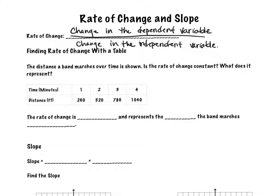This will make more sense in a second. We have a few different ways to find rate of change — typically we look at it in a graph or an equation, but you can use a table as well. They give us a table about the distance a band marches over time. I want to know if the rate of change is constant based on how far they march per minute. One key thing: the time increases by one each step — one to two, two to three, three to four — so we're always dividing by one.